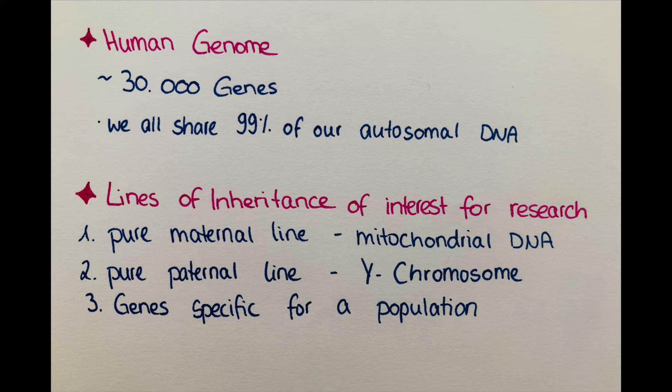The third line is genes which are specific to a single population. For example, cystic fibrosis and lactose intolerance can be traced back to originating in Europe. Researchers try to figure out where a disease or characteristic of a population is arising from, which gives ideas about where in the genome the gene is located and how to treat or alter its structure.